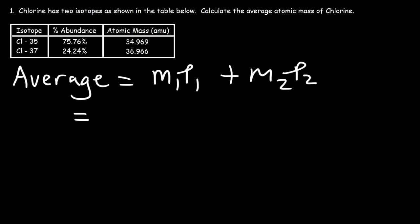So the mass of the first isotope is 34.969 amu (atomic mass units). Now the percentage is 75.76. We need to divide that number by 100, or you can move the decimal point two units to the left, so it becomes 0.7576.